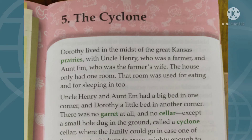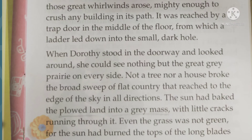When Dorothy stood in the doorway and looked around, she could see nothing but the great grey prairie on every side. Not a tree nor a house broke the broad sweep of flat country that reached to the edge of the sky in all directions. The sun had baked the ploughed land into a grey mass with little cracks running through it. Even the grass was not green, for the sun had burnt the tops of the long blades until they were the same grey colour to be seen everywhere.